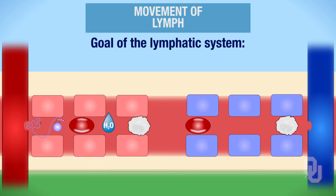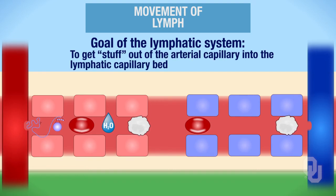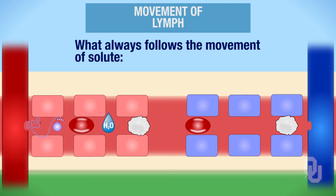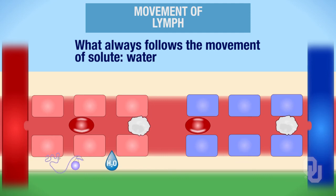What's the goal of the lymphatic system? To get stuff out of the arterial capillary into the lymphatic capillary bed. We know that fluid can move from the arterial capillary to the interstitial fluid, and so can some plasma proteins, because they are small enough to squeeze through. What always follows the movement of solute? Water. So the movement of protein from the arterial capillary to the interstitial fluid creates an osmotic gradient, and then water will move from the arterial capillary into the interstitial fluid. So both protein and water can then move into the lymphatic capillaries.